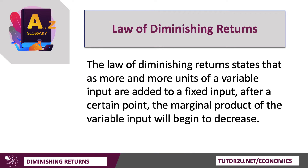It states that as more and more units of a variable input, such as labour, are added to a fixed input, such as capital, after a certain point, the marginal product of the variable input will begin to decrease. In other words, the additional output — the extra output produced by adding more labour — will start to fall, ceteris paribus, with all other factors remaining constant.